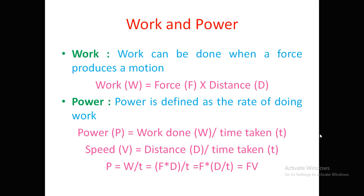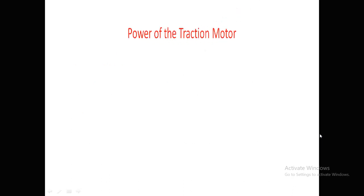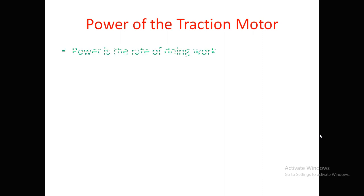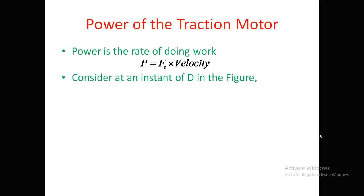Since distance divided by time is velocity, power P equals force F multiplied by velocity v. In traction, F is the tractive effort and v is the speed or velocity. So we can easily find the power of a traction motor: P equals tractive effort Ft multiplied by velocity. Here we consider the speed-time curve of the trapezoidal type.